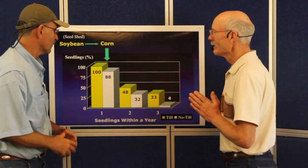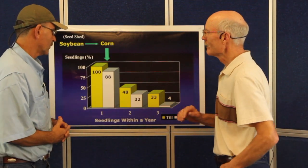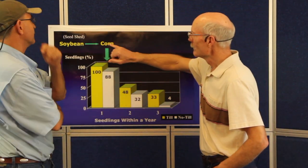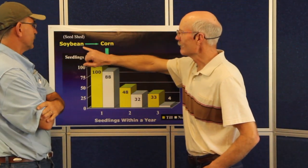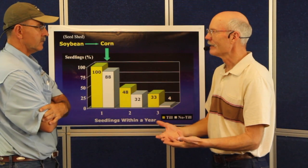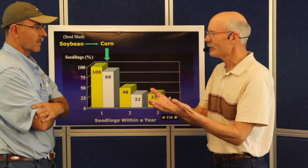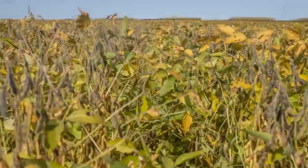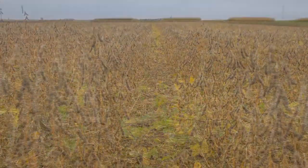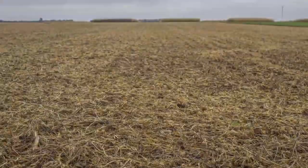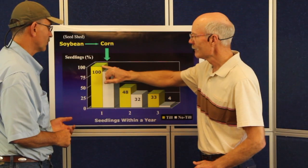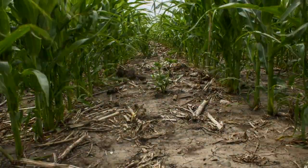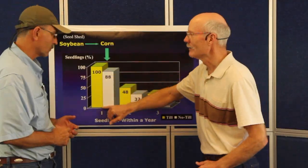For this example, I'd like you to consider a soybean-corn rotation. In soybeans you have weeds that escape control, they grow, they produce weed seeds and drop them to the soil surface. If you grow corn the next year, you would have 100 seedlings in your till than 88 in your no-till.